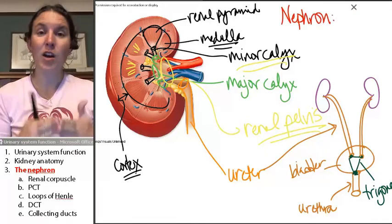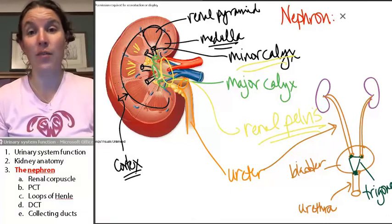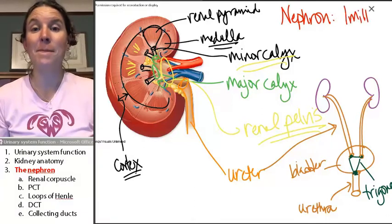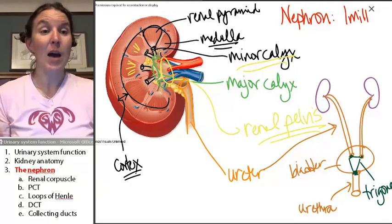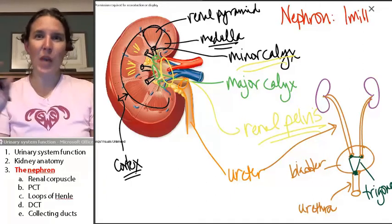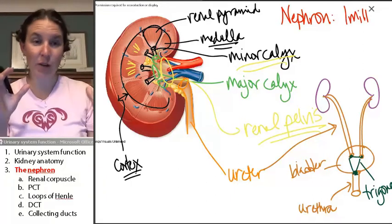The nephron is the functional unit of the kidney. There are a million of them in each kidney. Apparently, as you age, like when you hit around 40, you start losing your nephrons.